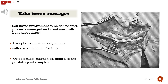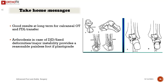Take-home messages: Soft tissue involvement must be properly considered, managed, and combined with bony procedures — exceptions are selected stage 1 patients without flat foot. Osteotomies provide mechanical control of the peritalar joint complex. Good long-term results are reported for medial calcaneal osteotomy and flexor digitorum longus transfer. Arthrodesis in cases of degenerative joint disease, fixed deformities, or major instability provides a reasonably painless foot if plantigrade.